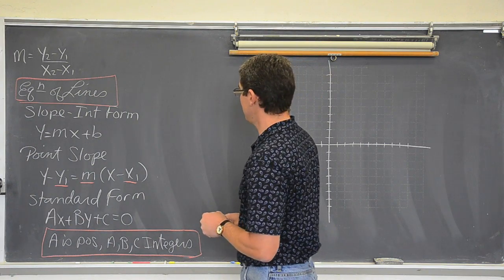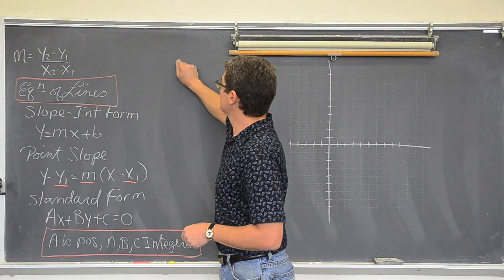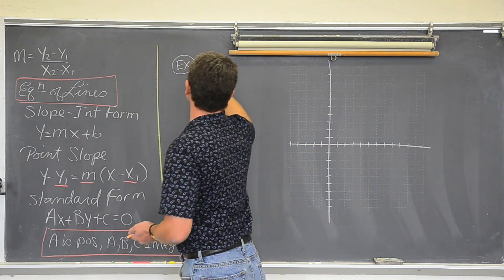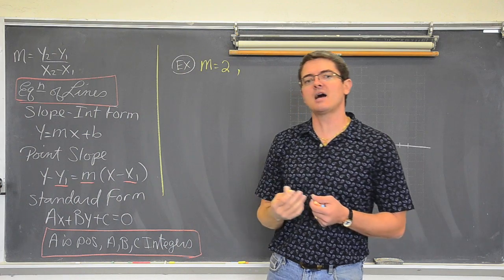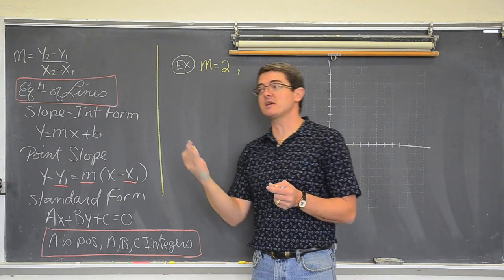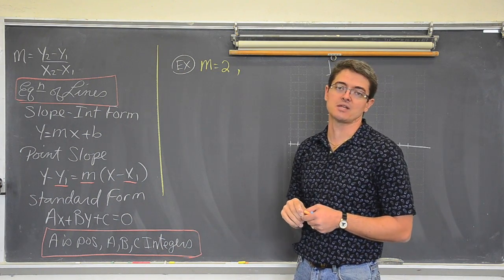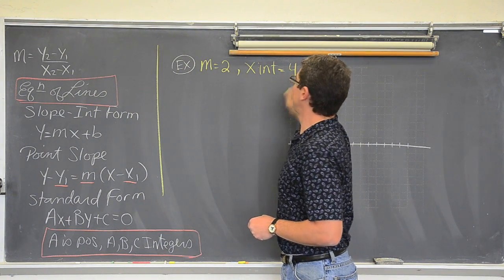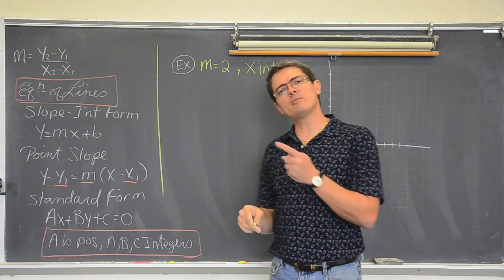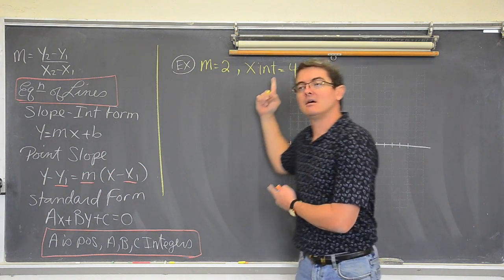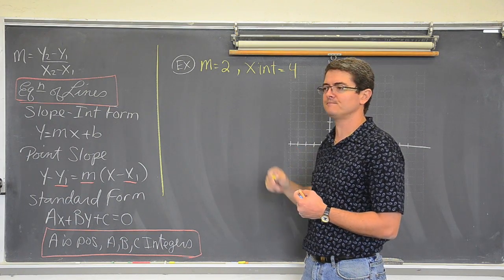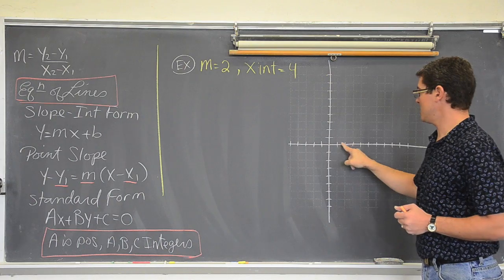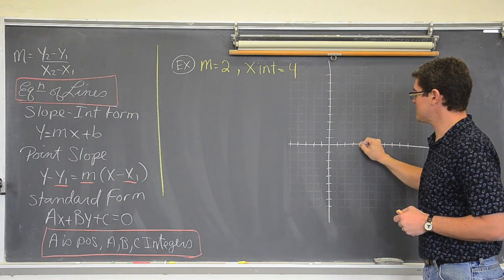We are going to go right to that this time and say that we have a slope of 2. The point this time is given to us as the x-intercept, so my x-intercept is equal to 4. So when I have a point, I need an x and a y, but yet I said the x-intercept is 4. If you are crossing the x-axis at 4 — 1, 2, 3, 4 — what is the coordinate of that point?